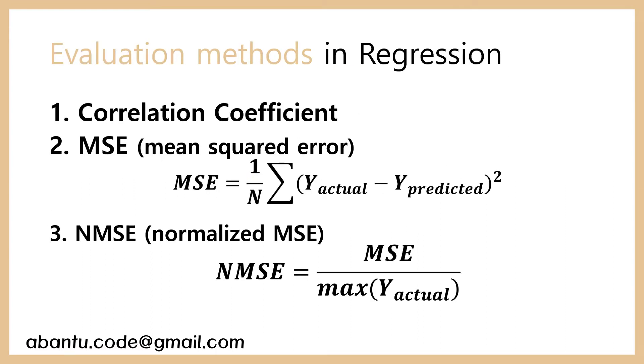So there are three types of evaluation methods in regression. The first one is the correlation coefficient.